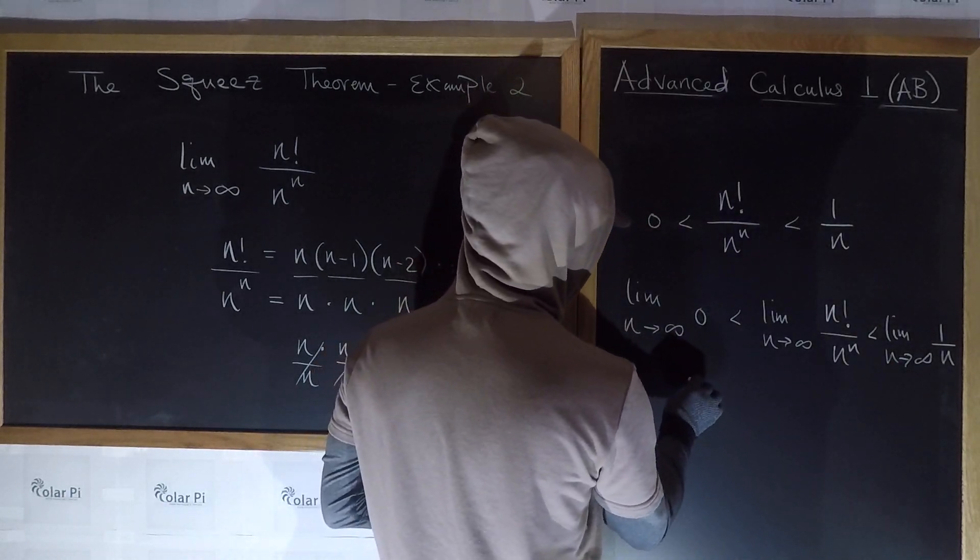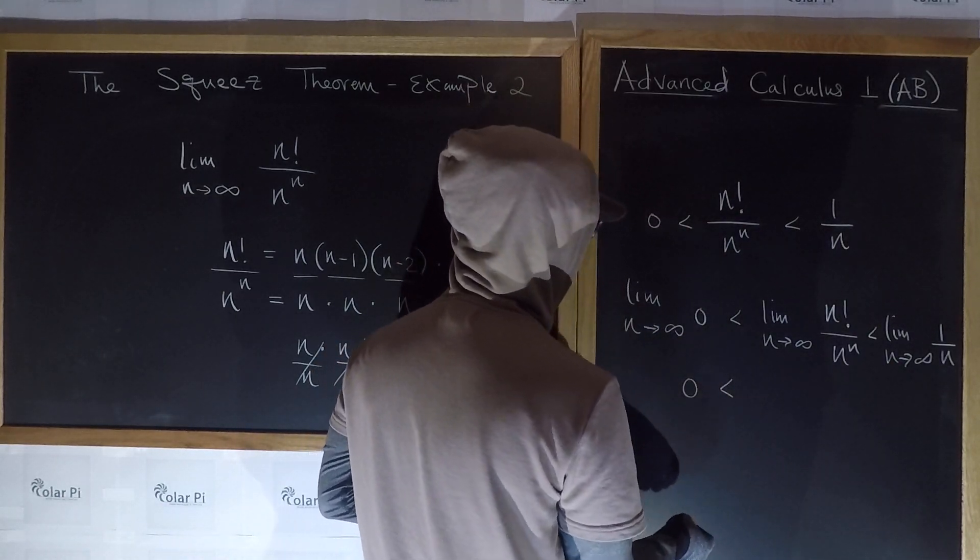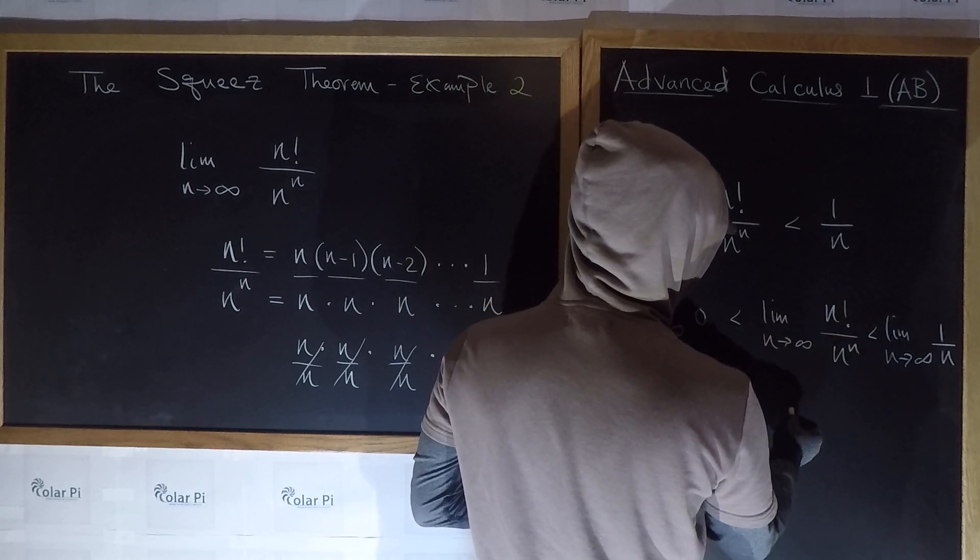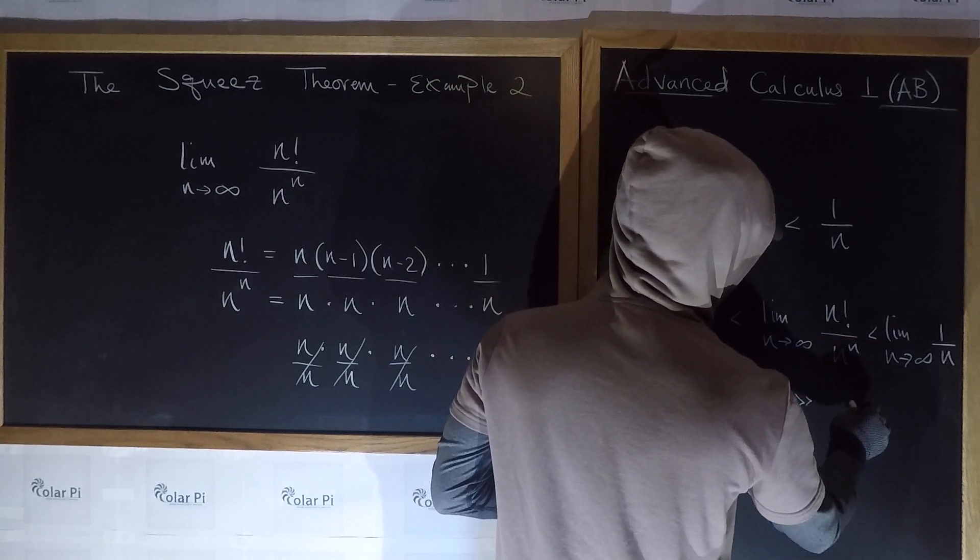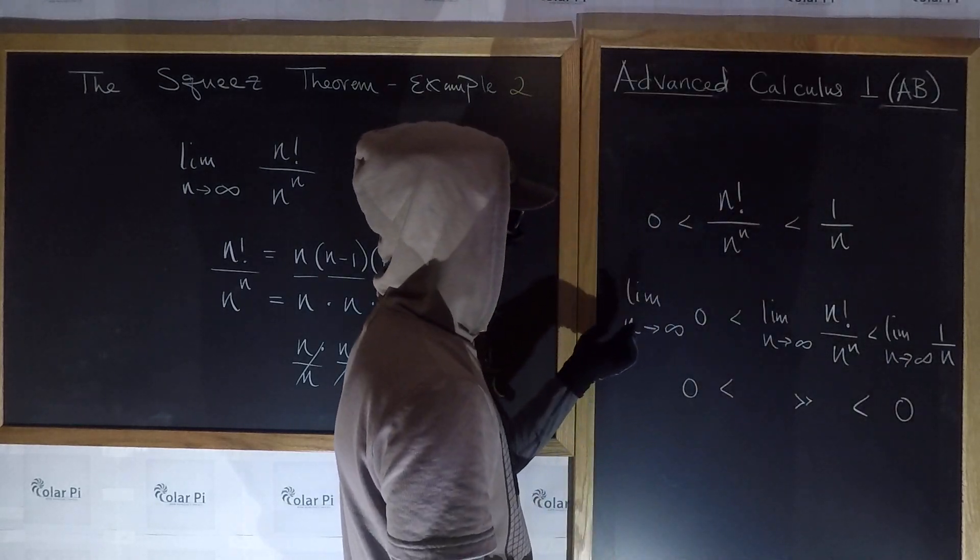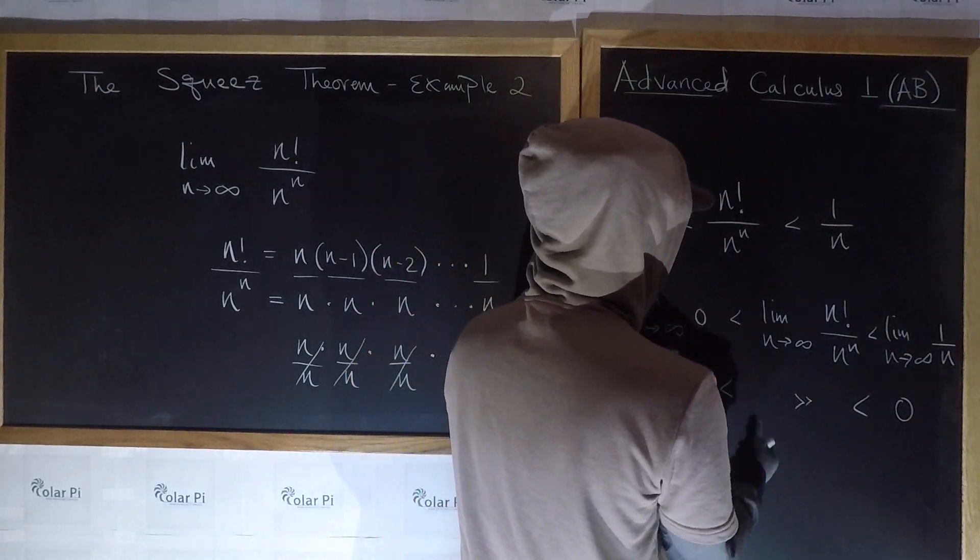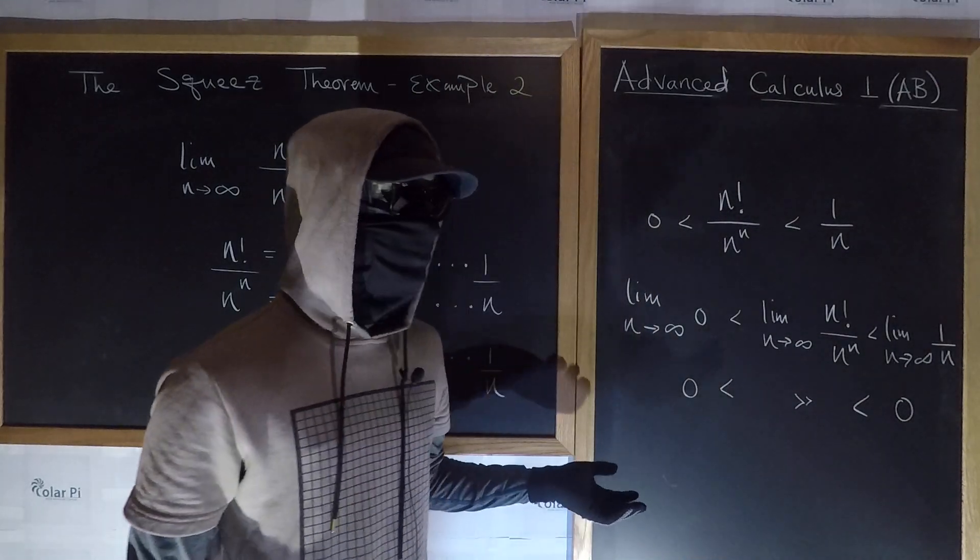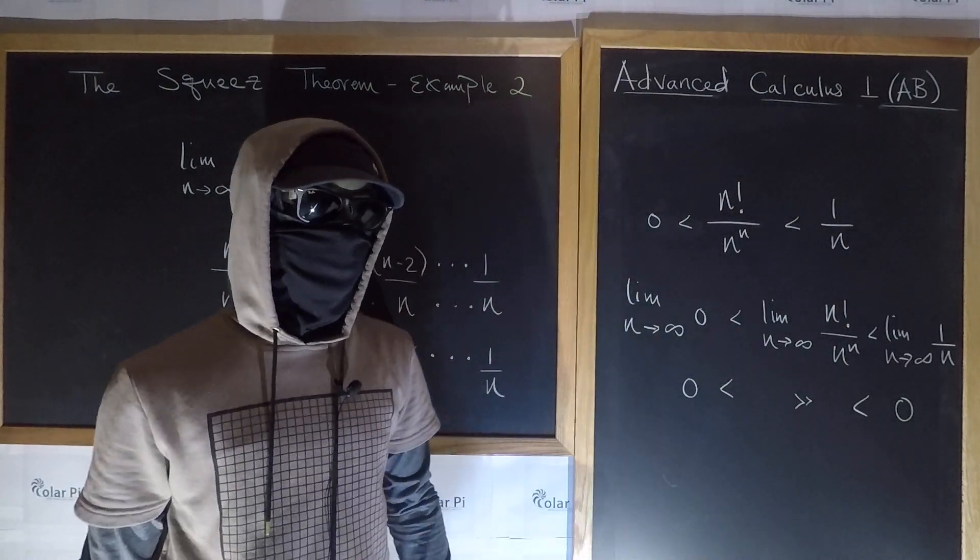Well, clearly this here is 0. So, we have 0 is less than, and I don't want to rewrite this, so I'll just use ditto, is less than, what is this limit? 0. So, this limit on either side has limits that are equal to 0. So, it must be equal to 0.